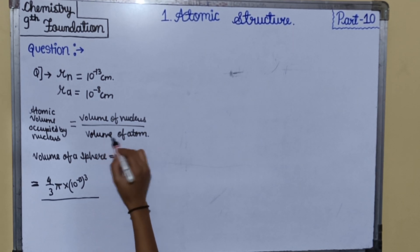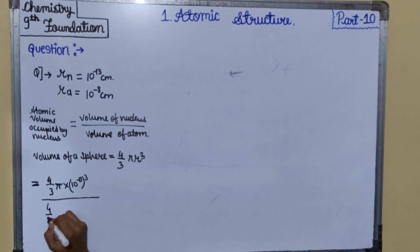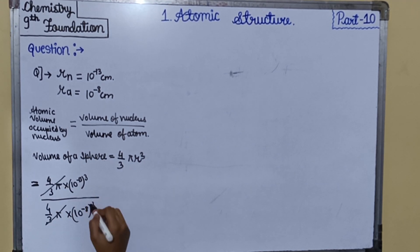Upon the volume of atom, that is 4/3 π into 10 raised to minus 8 whole raised to 3. This and this will get cancelled.